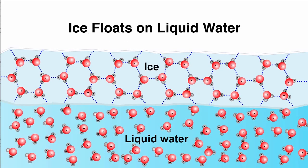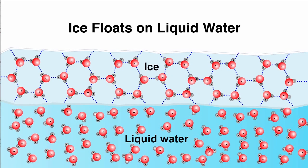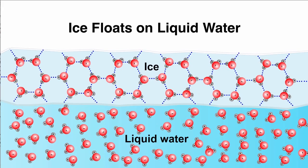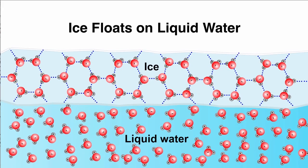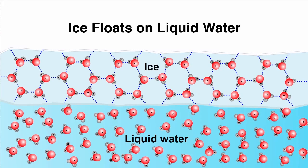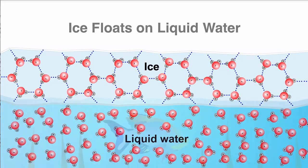If ice were more dense than water, it would sink, and ponds and lakes would freeze solid, making life there impossible. Instead, bodies of water always freeze from the top down. The ice on the surface acts as an insulator to protect the water below from freezing. This protects aquatic organisms so that they can survive the winter.